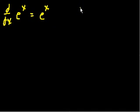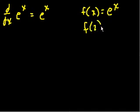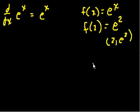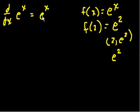Just to hit the point home: if f of x equals e to the x, and f of 2 equals e squared, and I asked you what is the slope of e to the x at the point 2 comma e squared — the slope at that point is e squared. That blows my mind. It's a function where the slope at any point on that curve is equal to the function itself. And it's e — e shows up all sorts of places. I might do a whole series of presentations called 'the magic of e.'